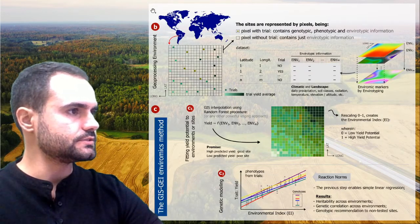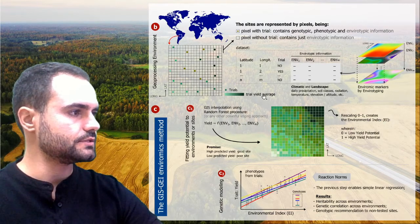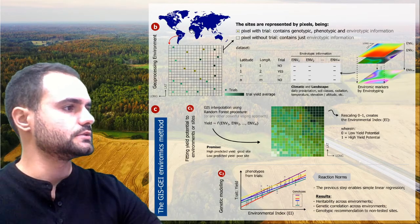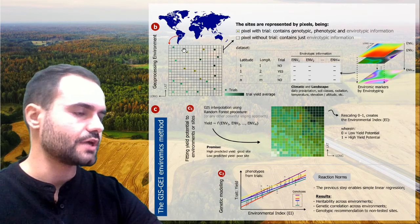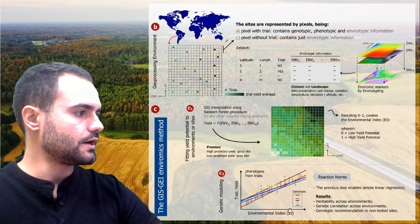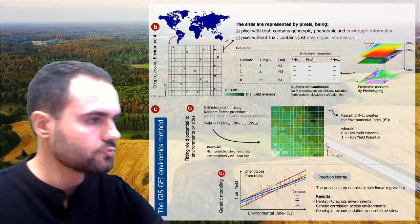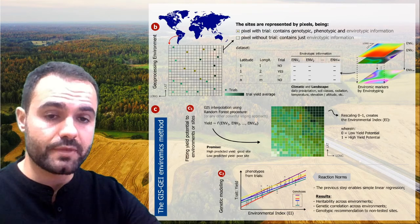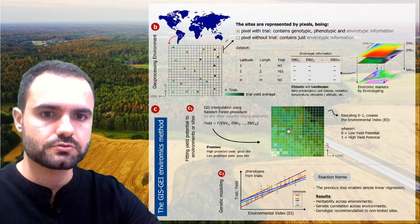This figure depicts the type of data that every enviromic analysis will need. We have pixels with data information: phenotype, genotype, and environmental data. Here is a method showing how to transform environmental variables into environmental markers that can be used for this purpose.